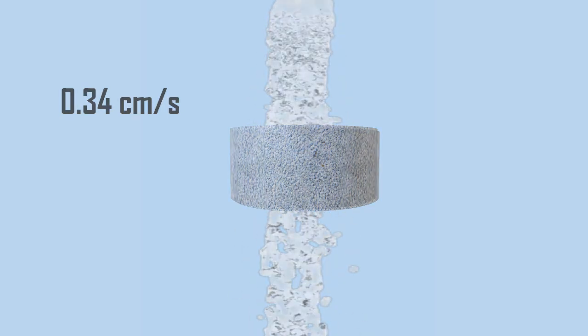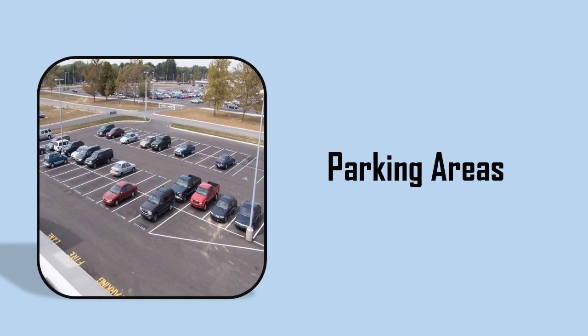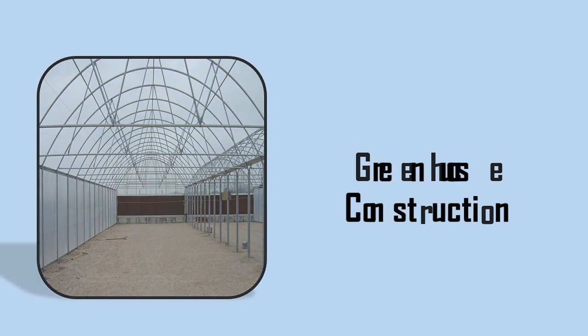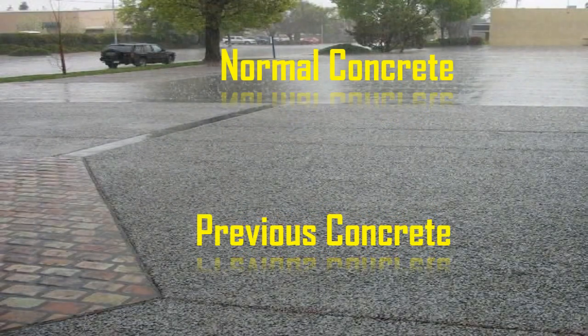Pervious Concrete is traditionally used in parking areas, areas with light traffic, pedestrian walkways, and greenhouse construction. It is an important technique for sustainable construction. This method is also widely used for the construction of pavements for preserving stormwater runoff.